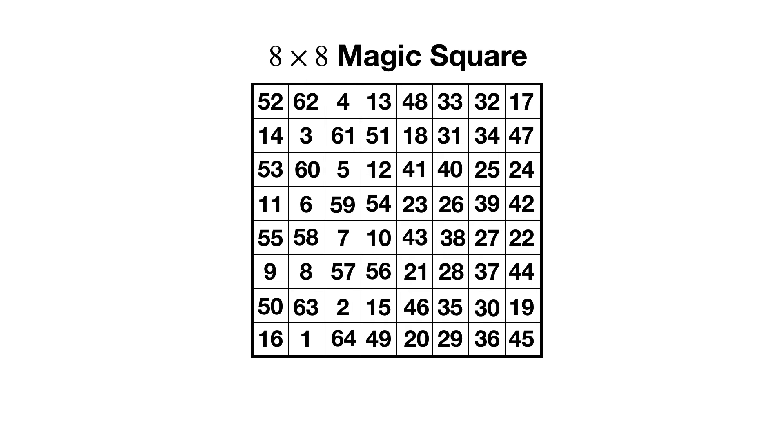Here's a bigger magic square based off of a construction by Benjamin Franklin. This time the magic sum is 260. You can imagine that it would be difficult to construct such a magic square from scratch.